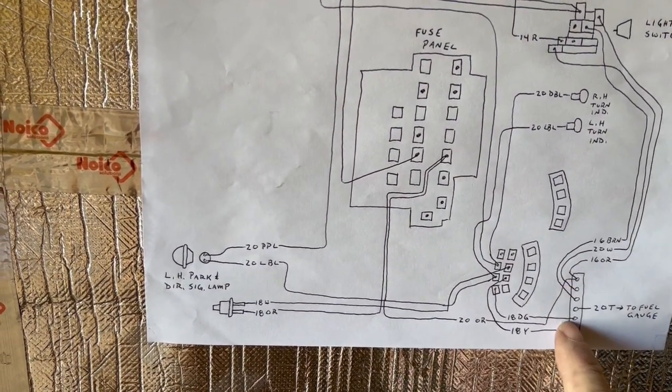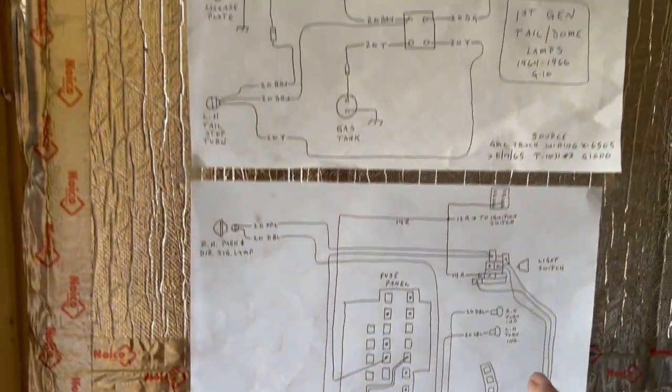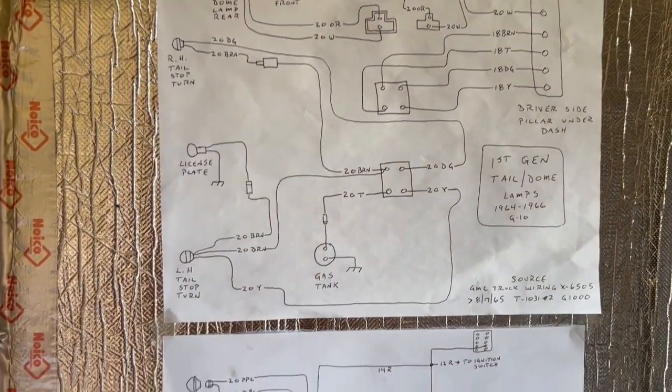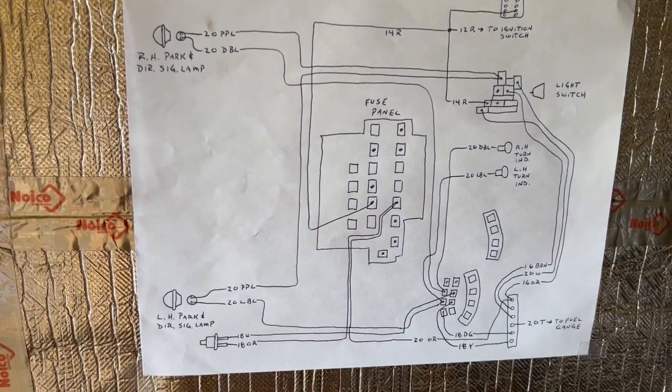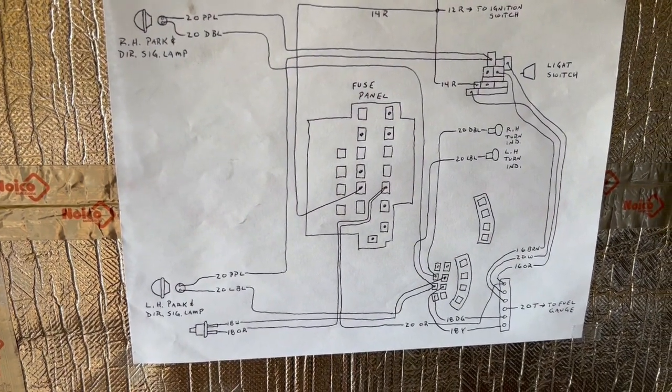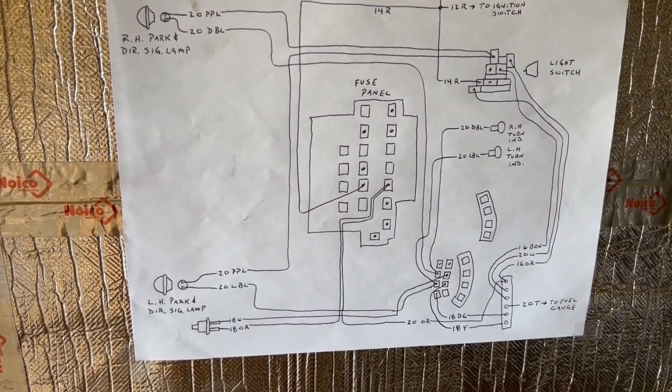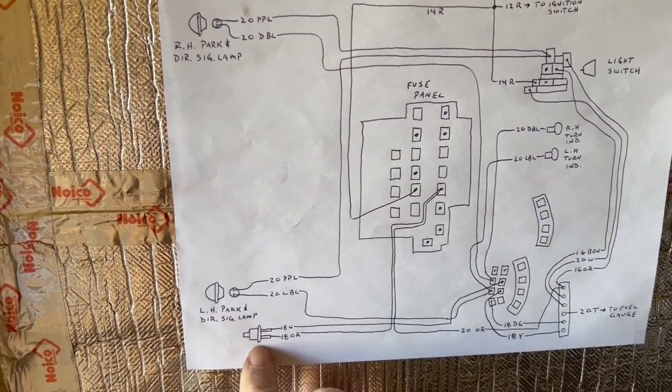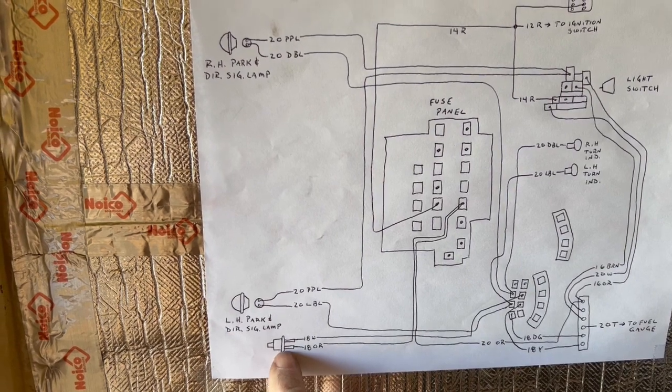But this is the other connector, other side of the connector that we see up here. And the reason I wanted to include this was because it shows the power source at the fuse panel, and also the brake light switch. Which, I guess I didn't mark that, but that is the brake light switch.